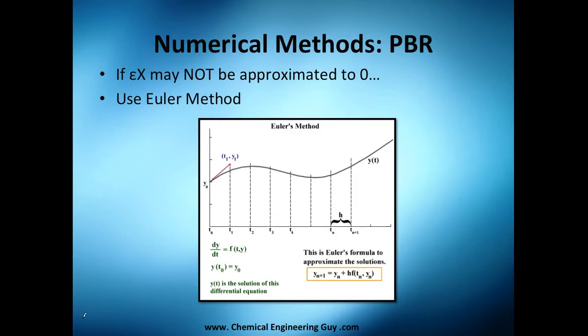Once again, we have our models of PBR. We have F1, which depends on conversion and pressure, and F2, which depends on conversion and pressure. We got this system and huge equations for this, with an initial condition of mass which is generally zero.